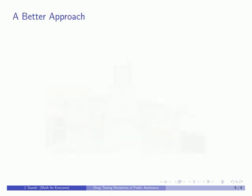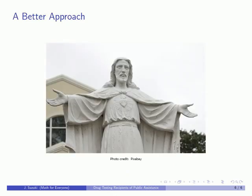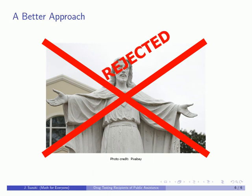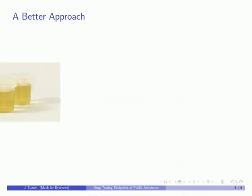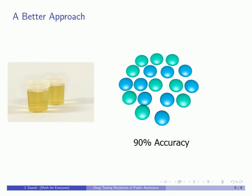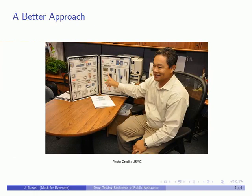Throughout history, religious leaders have told us that we should help those most in need of our help without asking whether they deserve our help. Even if you reject these teachings and believe that we should deny public assistance to substance abusers, drug testing is an inefficient way to find these people. Most substance abuse advocacy groups and counselors agree that the best tool for identifying those with a substance abuse problem is a well-trained counselor. In other words, you can tell more about whether a person is a substance abuser by talking to them than by looking at their urine.